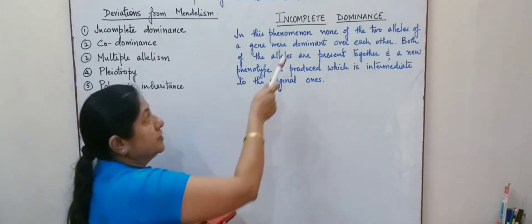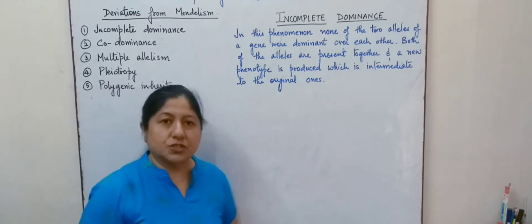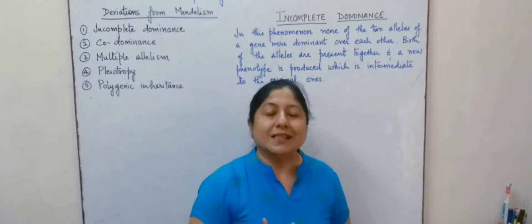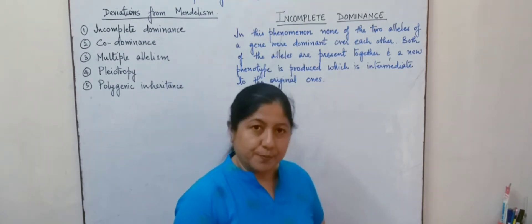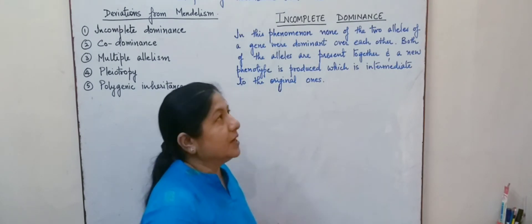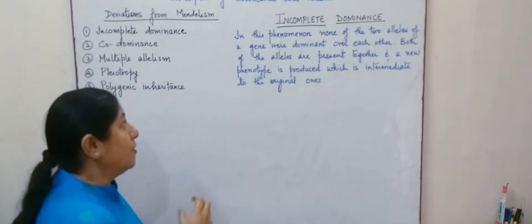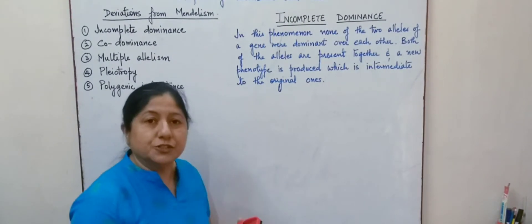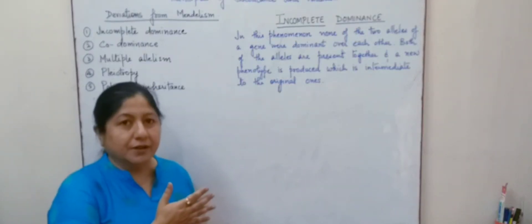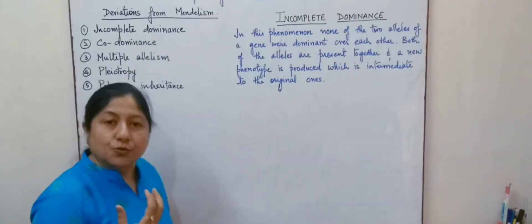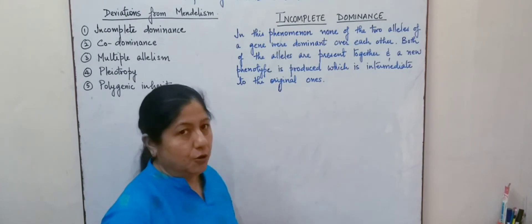We are going to start first with incomplete dominance. As the name suggests, incomplete dominance means that the dominant gene is not able to express itself completely. Here, none of the two alleles of a gene are dominant over each other, and both the alleles, although present together, are producing a new phenotype that is different from the original one.